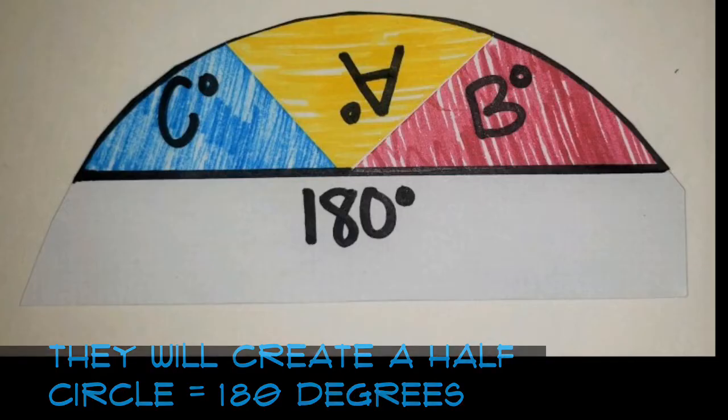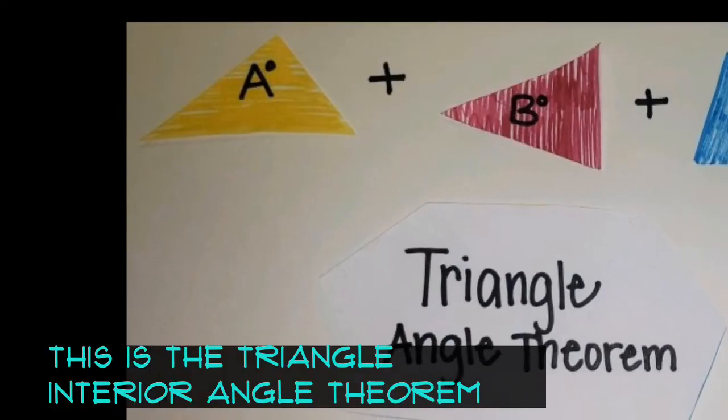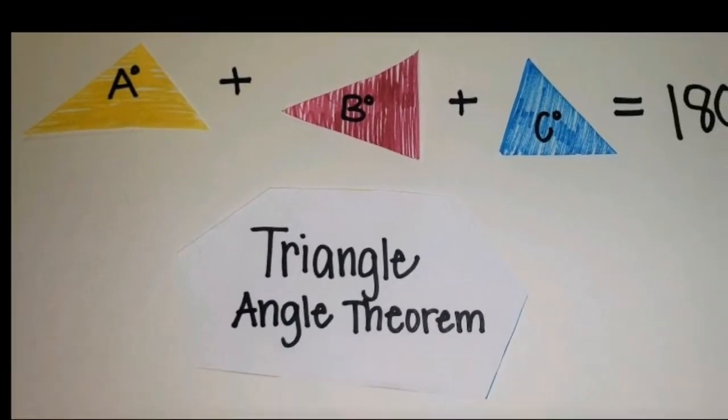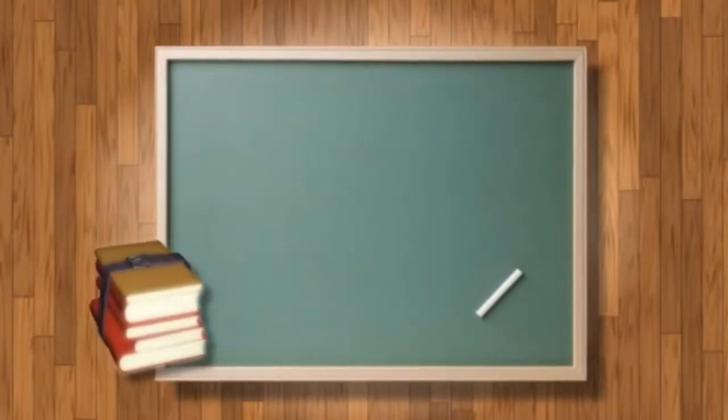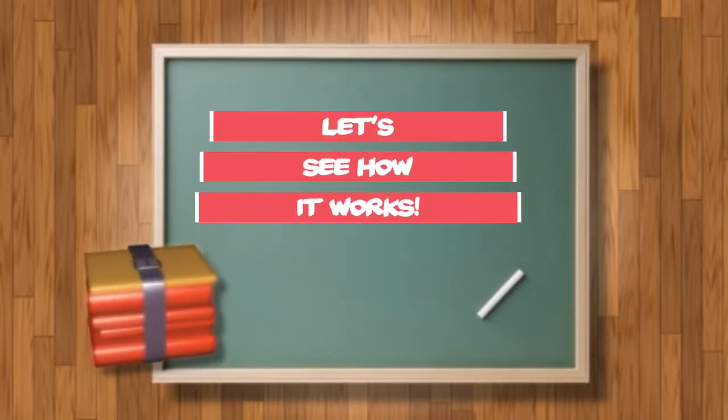So the theorem states angle A plus angle B plus angle C will always total 180 degrees. So let's take a look and see if we can prove this theorem by seeing how it works.